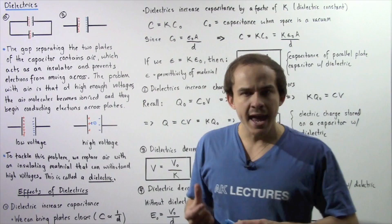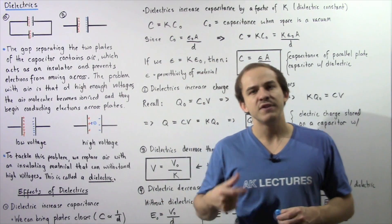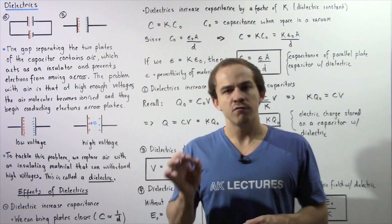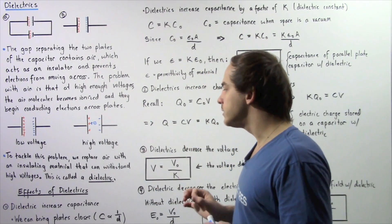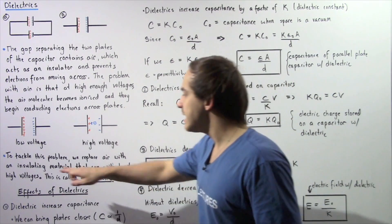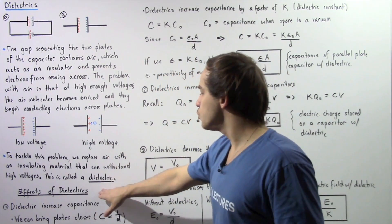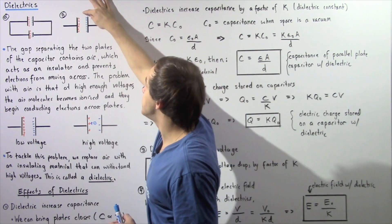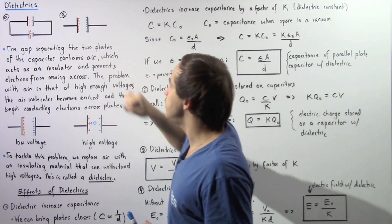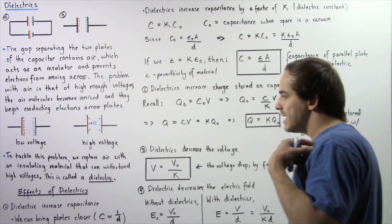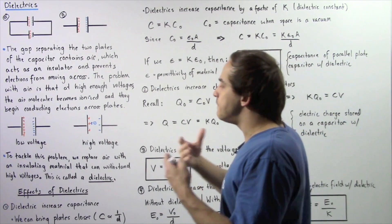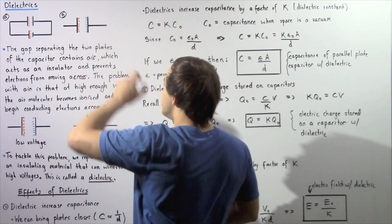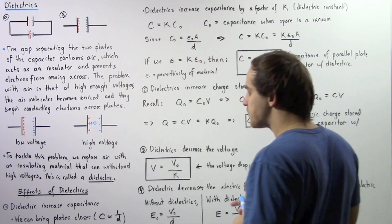One way to tackle this problem is by replacing air with another type of insulating material capable of withstanding high voltages. This insulating material is called a dielectric. We can place some type of dielectric in between our two plates. Now let's examine what the effects are of placing a dielectric between our two plates.